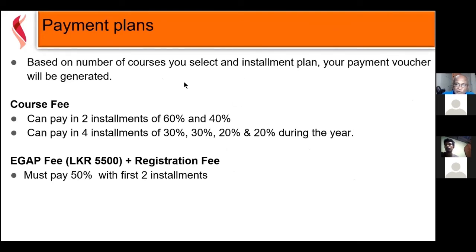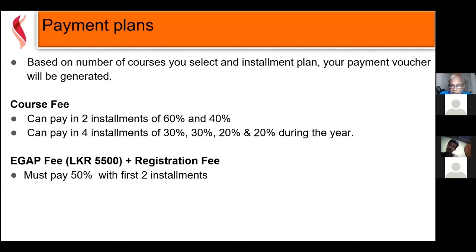Your course fee depends on the number of courses you take. If you take all 17 credits in the first semester, you pay the full amount. If you take only 12 credits, your fee will be less. You have an installment plan: 30% first installment, 30% second, 20% and 20% for the remaining two during the year. When you register for semester two courses in September, new vouchers will be generated and the fee will increase to include the first semester installments for second semester subjects.